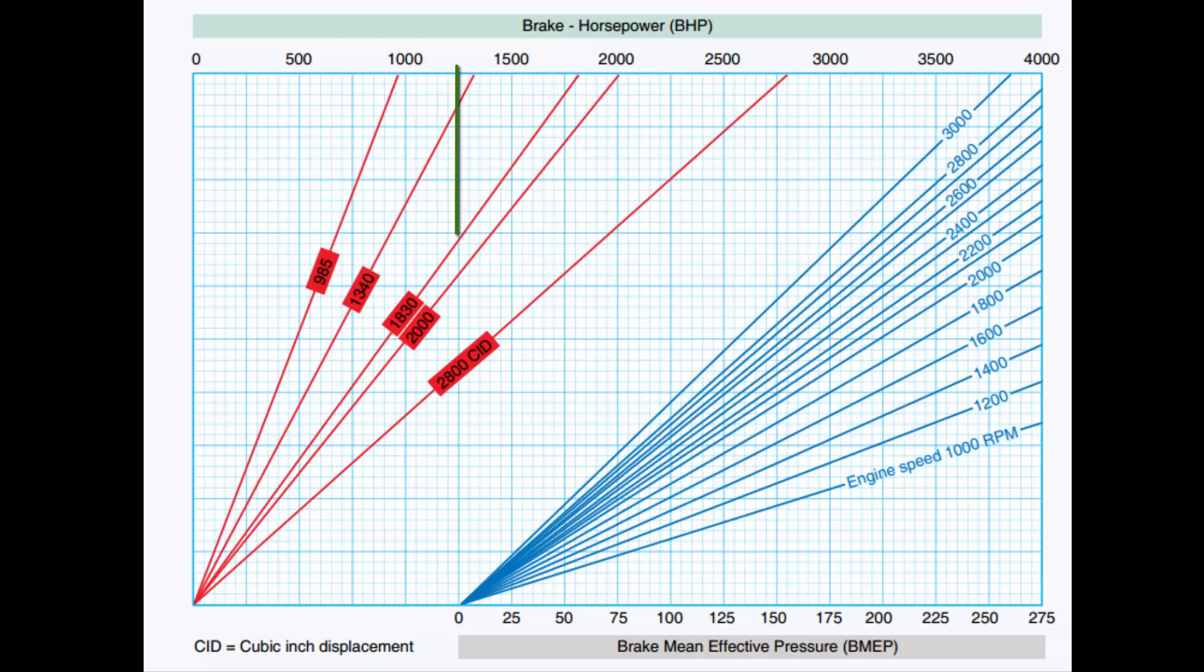From this line, where these two intersect, we're going to go horizontal from this intersection point. And we hit this line over here, that's a 2500 RPM line.